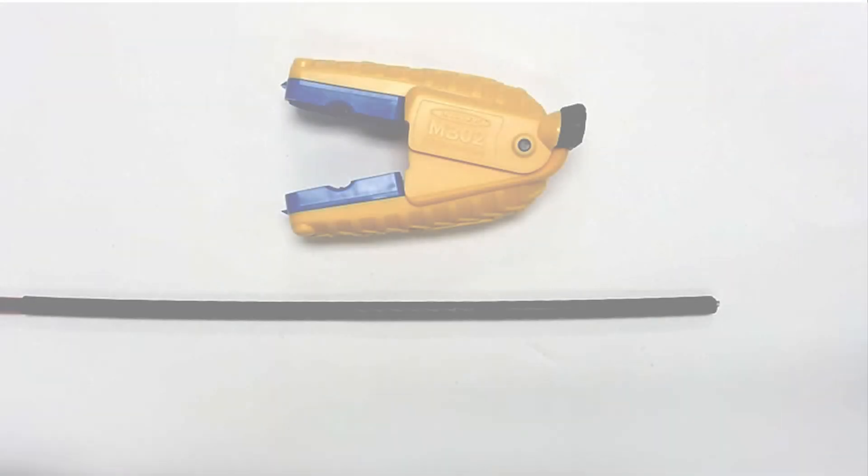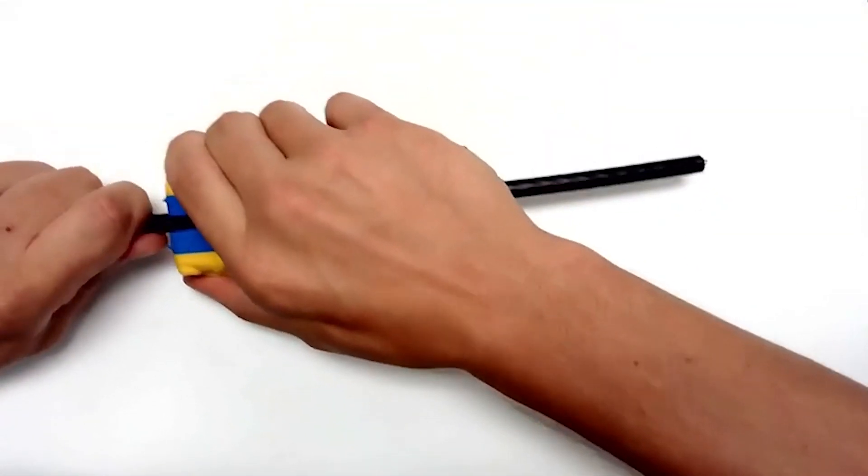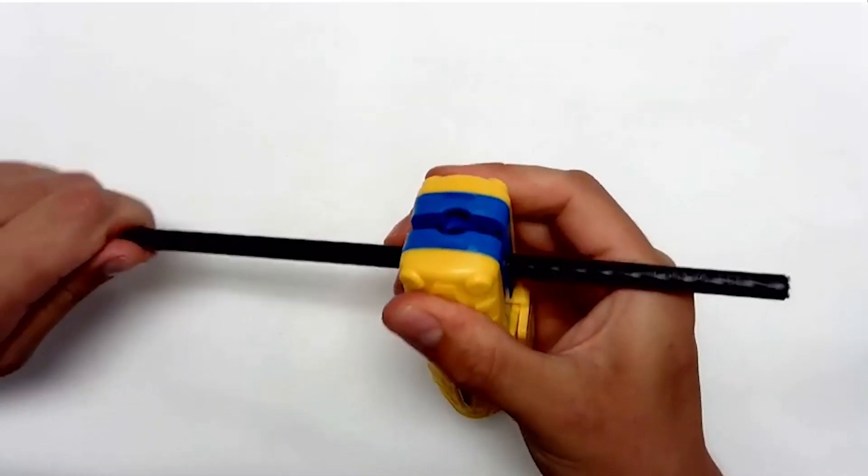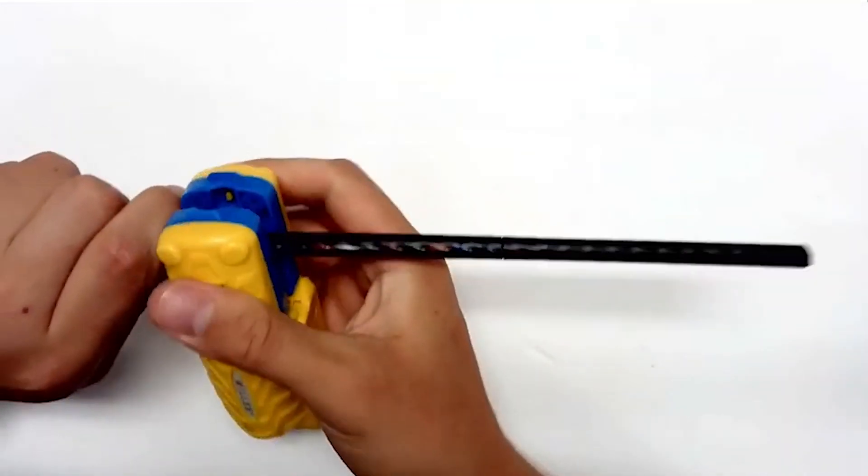Today we'll show you the Miller MB02 all-purpose cable slitter. The Miller MB02 is designed to slit and ring cable jackets up to 15.25mm in diameter.